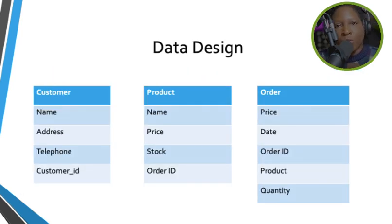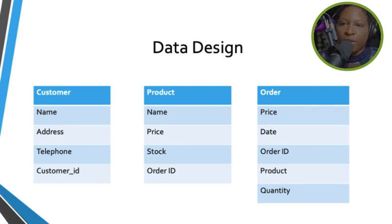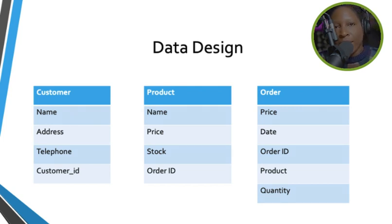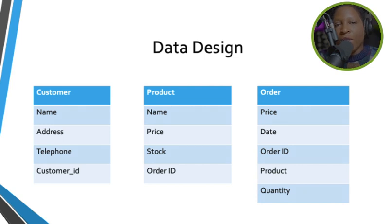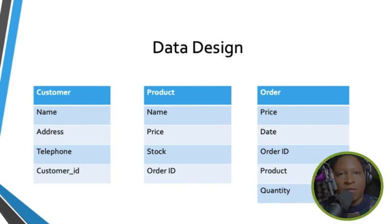Here is an example of how a table looks in a database. We have a customer table, a product table, and an order table. This database is not fully normalized — for example, we can strip out the address and create a separate address table. Doing that is a form of normalizing your database.